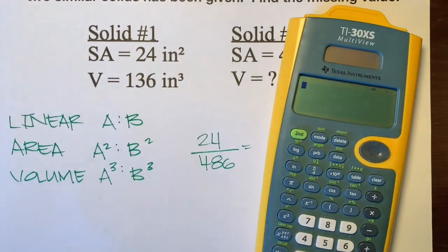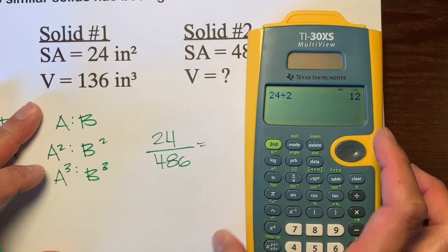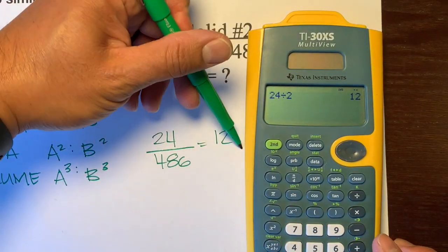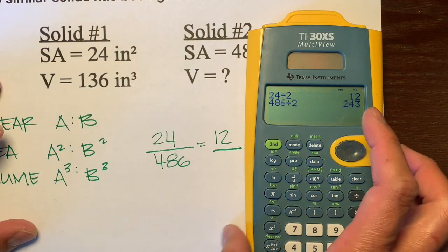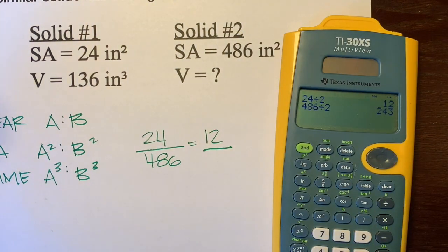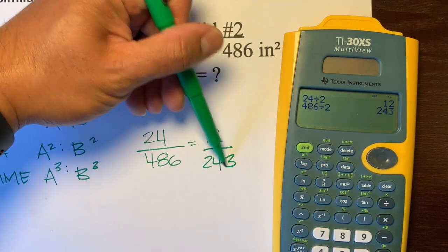So, let's use our trusty old calculator. It looks like 24 is, well, both of these numbers are even. So, let's divide 24 in half to make that 12. And let's divide 486 by 2 and make that 243.